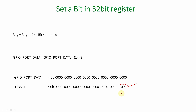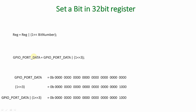We perform an OR operation between these two values as per our sequence: GPIO_PORT_DATA = GPIO_PORT_DATA | (1 << 3), and the result is stored back in GPIO port data. When we perform this OR operation, starting from bit number zero: 0 OR 0 is 0, bit number one: 0 OR 0 is 0, bit number two: 0 OR 0 is 0.